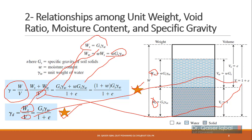The moisture content term does not appear in the dry unit weight equation because for dry soil, w = 0. You can also verify this by substituting w = 0 into the bulk unit weight equation γ = Gs·γw(1 + w)/(1 + e), which reduces to γd = Gs·γw/(1 + e). Multiple approaches lead to the same result.